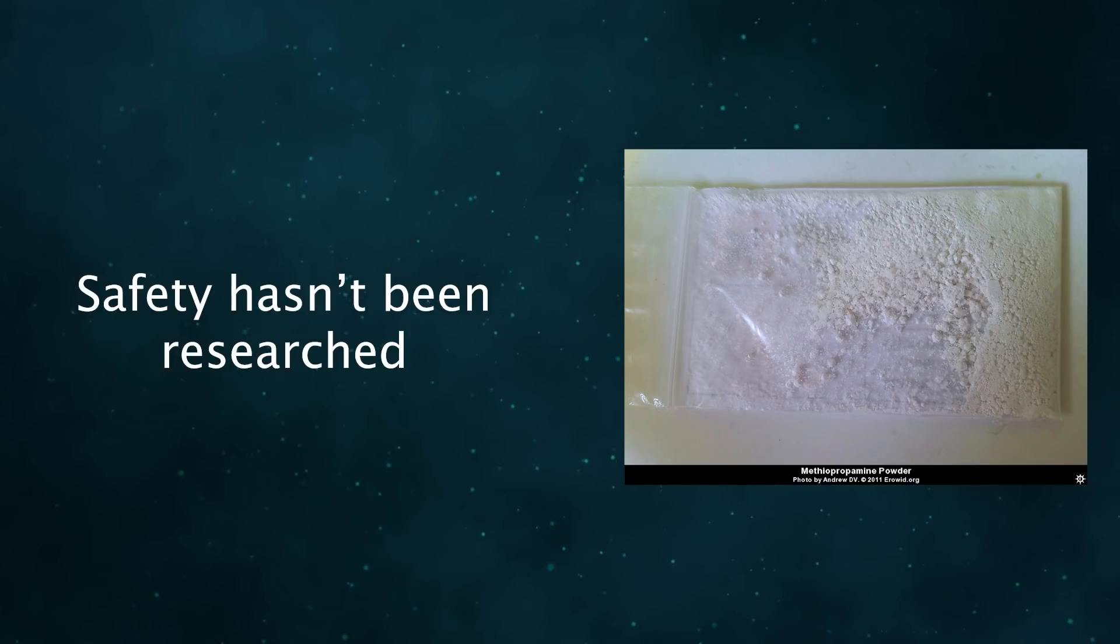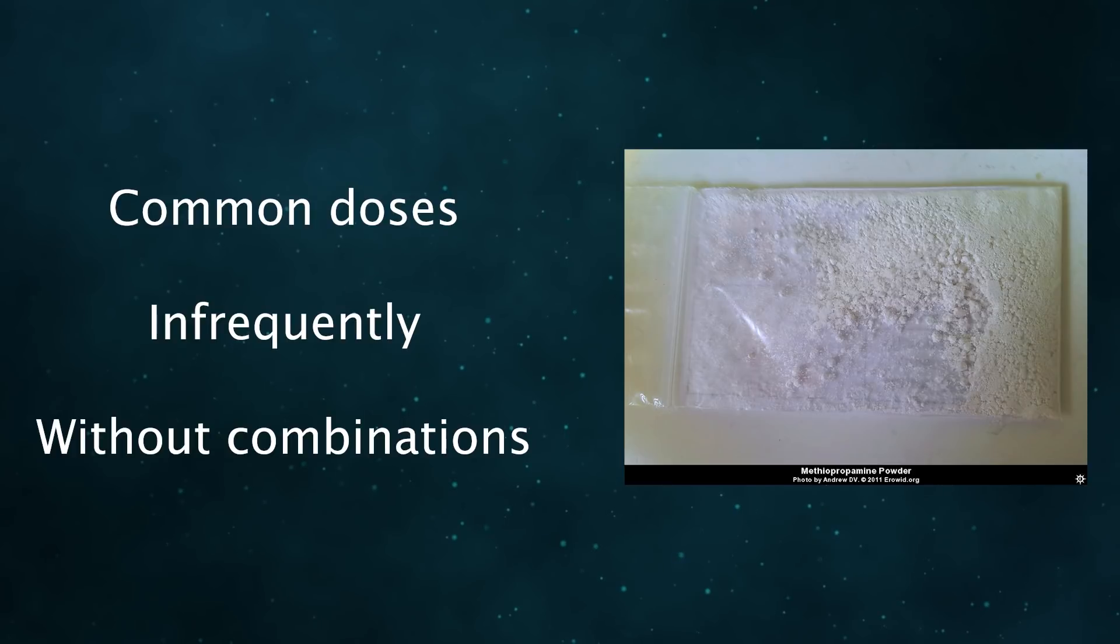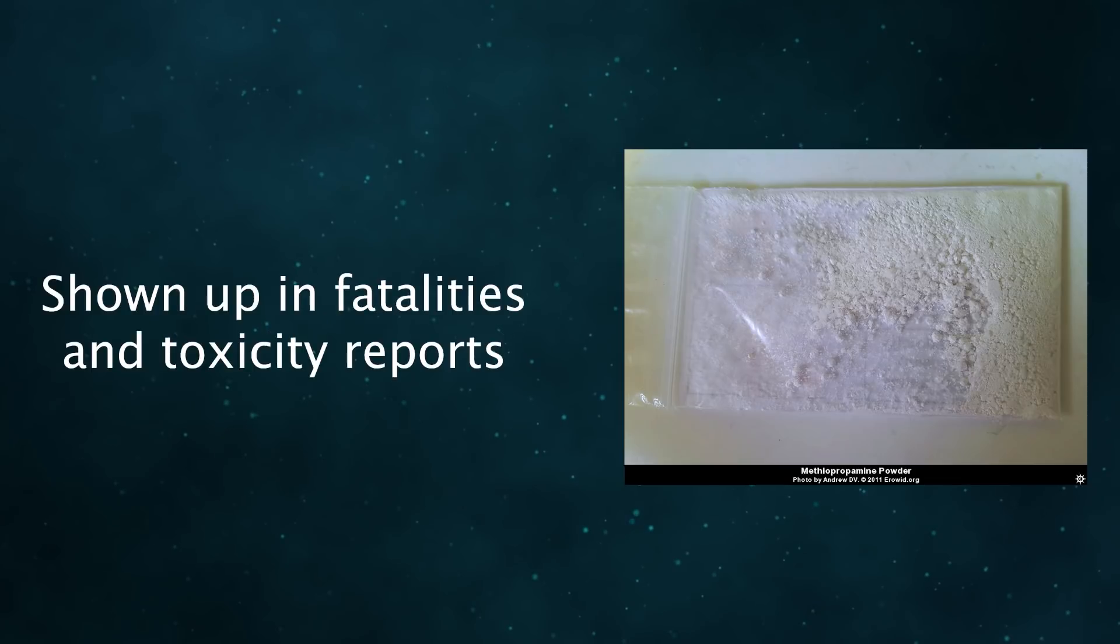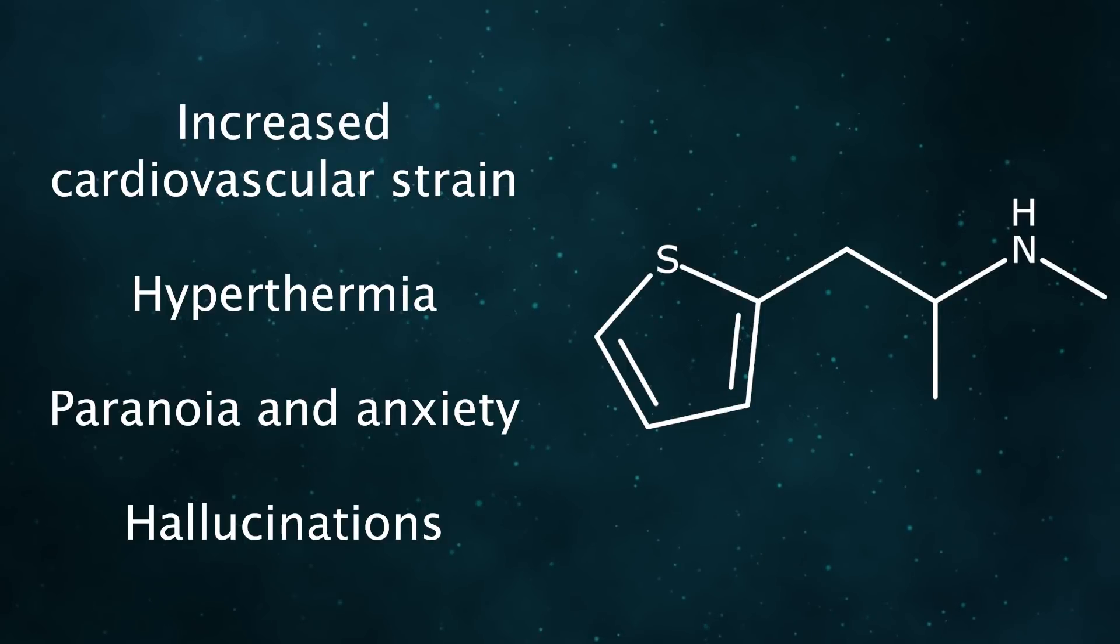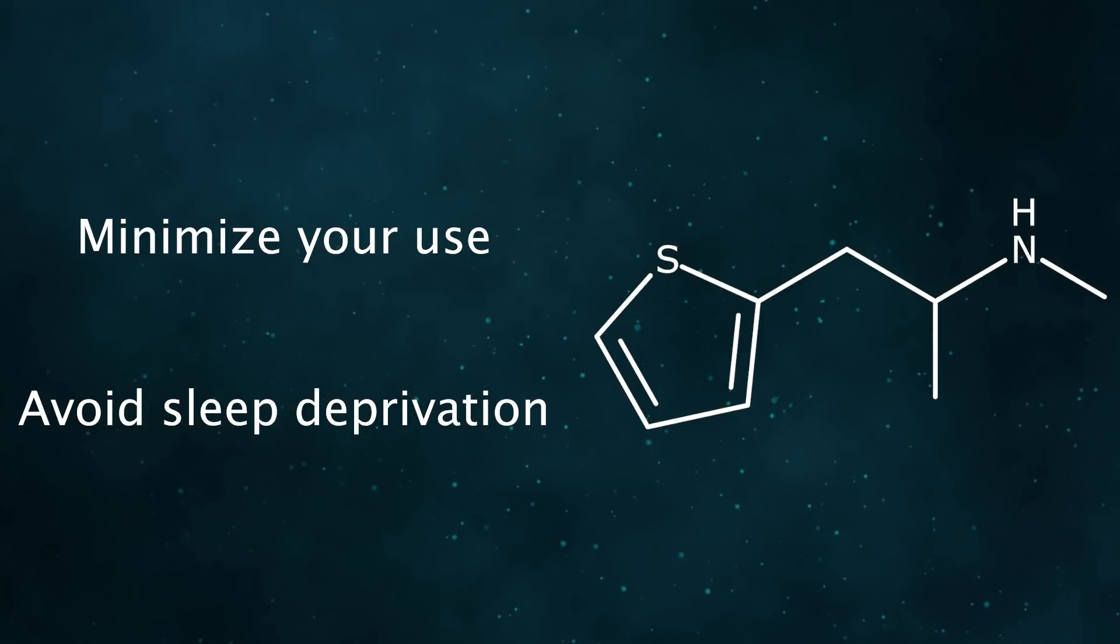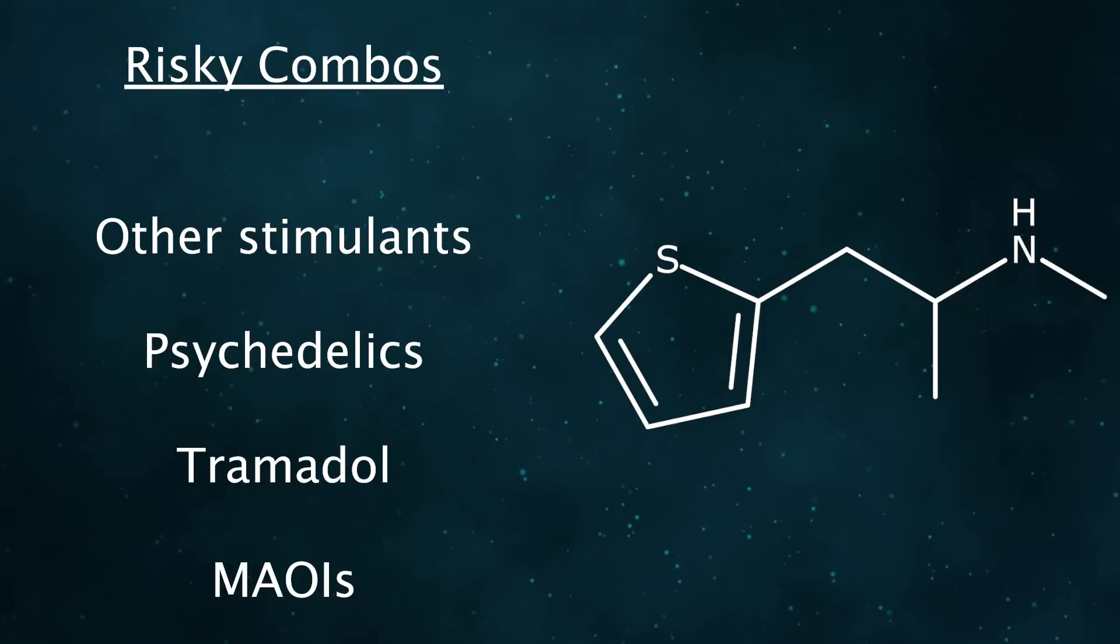MPA is a research chemical whose safety has never been examined. Given the lack of information, it should be taken at common doses, infrequently, and without combinations. It has shown up in some fatalities and toxicity reports. Between those reports and its apparent pharmacology, stimulant toxicity and stimulant psychosis can almost certainly occur in susceptible people or when large amounts are used. Problems like increased heart rate, increased blood pressure, hyperthermia, paranoia, anxiety, and hallucinations are possible. To reduce your risk, you should minimize your dose and avoid sleep deprivation. Some of the risky combinations include other stimulants, psychedelics, and tramadol.